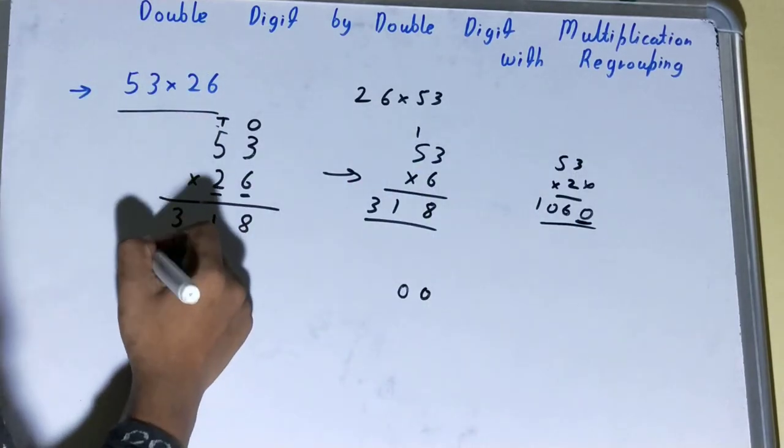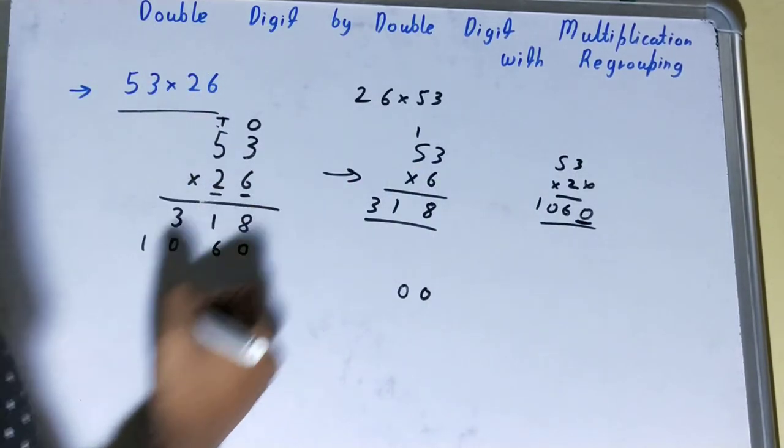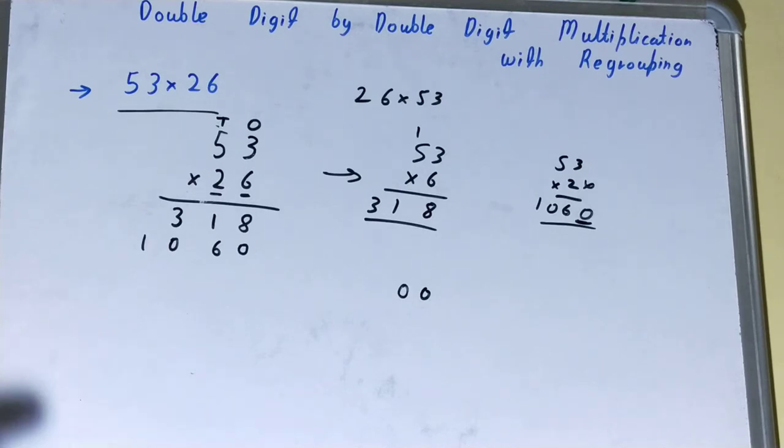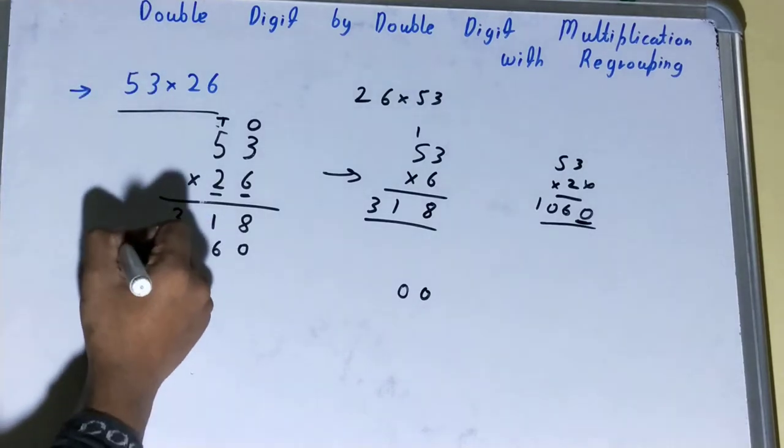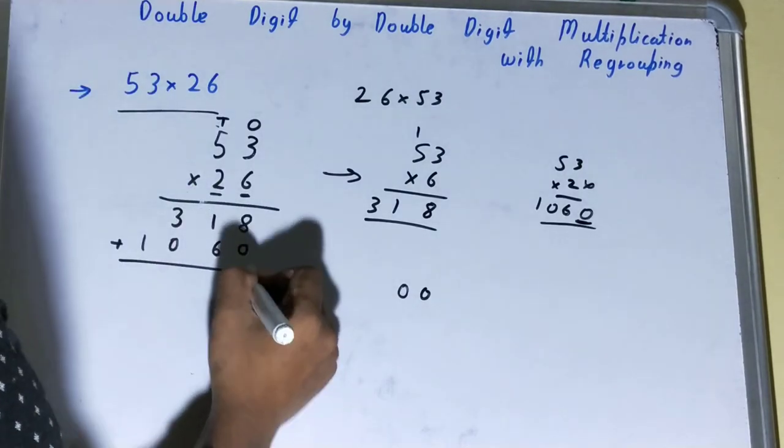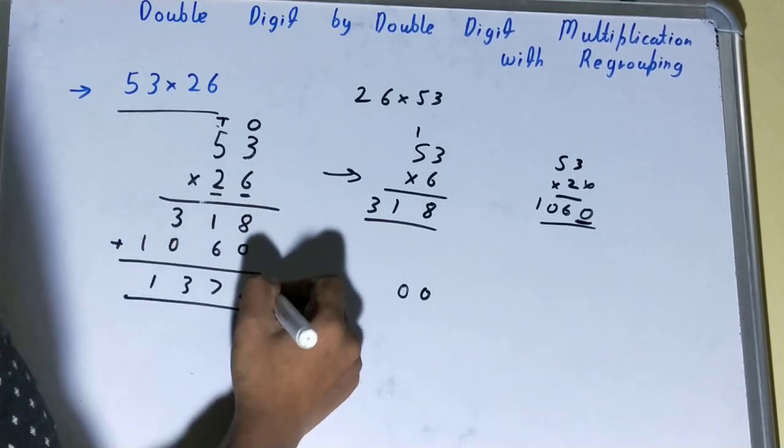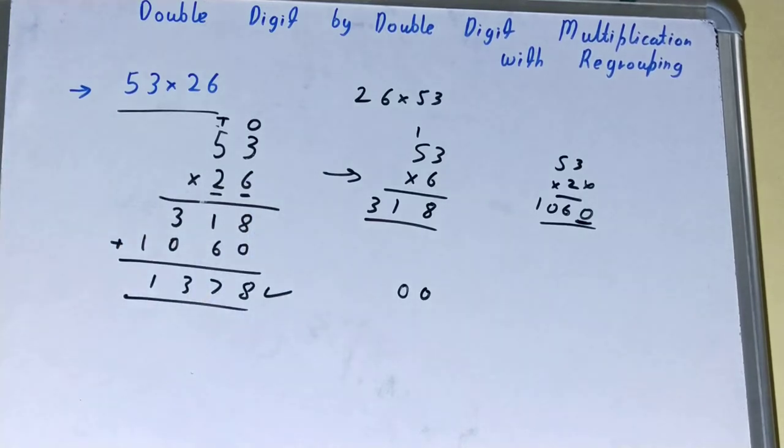Now we'll group the results to obtain the answer. It will be 8, it will be 7, it will be 3, and it will be 1. And that will be your final answer. So this is how we can do double-digit by double-digit multiplication with the regrouping technique.